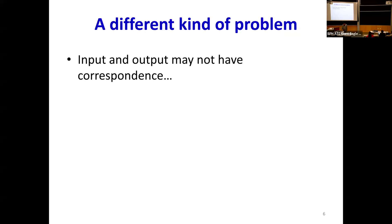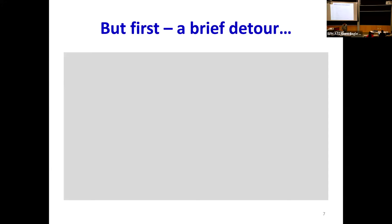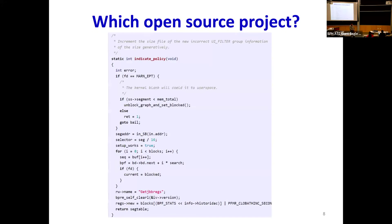The situation here is that the input and output may have no correspondence. But before we address that, we're going to look at a somewhat related problem. Look at this piece of code: static, int, indicate, policy, void, open parenthesis, open curly brace — the code is complete. And in fact, if you went through it, this would compile and it would run. Completely clean source code.